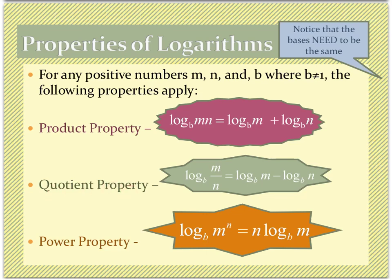The quotient property says that any time I have division of M and N, where they are positive numbers or could be variables, then I can split that division up using subtraction. Notice how we went from having one log to now two — so using these properties expands the logarithm.